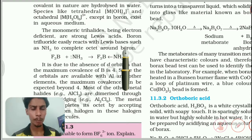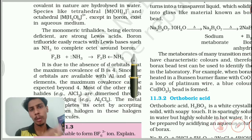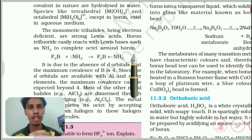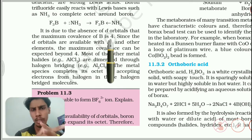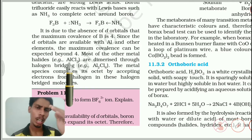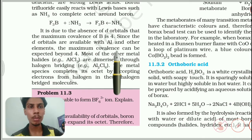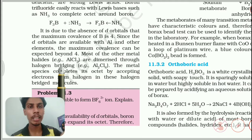It is due to the absence of d orbitals that the maximum covalence of boron is 4. Boron is from the second period, and second period elements don't have d orbitals, so the maximum bonds boron can form is 4. Since d orbitals are available in aluminum and elements below it, they can form bonds beyond 4. Most metal halides, for example AlCl₃, are dimerized with halogen bridging. The dimer of AlCl₃ is formed by two AlCl₃ units sharing bridging chlorine atoms.